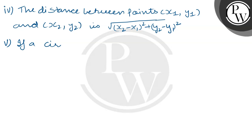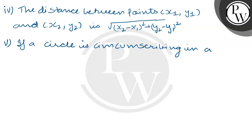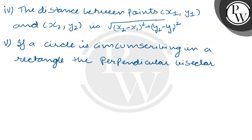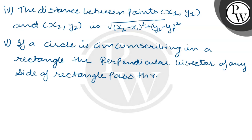Fifth key concept: if a circle is circumscribing a rectangle, then the perpendicular bisector of any side of the rectangle passes through the center. This is the key concept that will help us solve this question.